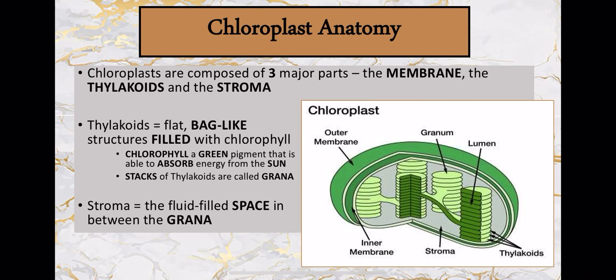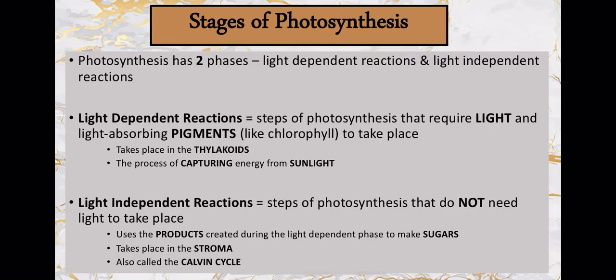Photosynthesis has two major phases: the light-dependent reaction and the light-independent reaction, also called the Calvin cycle, and they happen in different places within the chloroplast. The light-dependent reaction, which obviously depends on solar energy, happens in the thylakoids, because that's where the chlorophyll is — and chlorophyll is what actually absorbs solar energy. The light-independent reaction doesn't rely on chlorophyll anymore, so it actually happens out in the stroma, the space outside of the thylakoid.